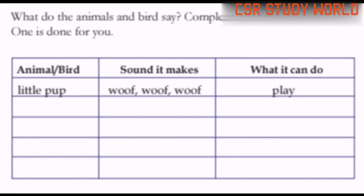Complete the table given below. One is done for you. Animals and birds — fill in the table with animal or bird name, sound it makes, and what it can do. Little pup — one entry is already done for you.